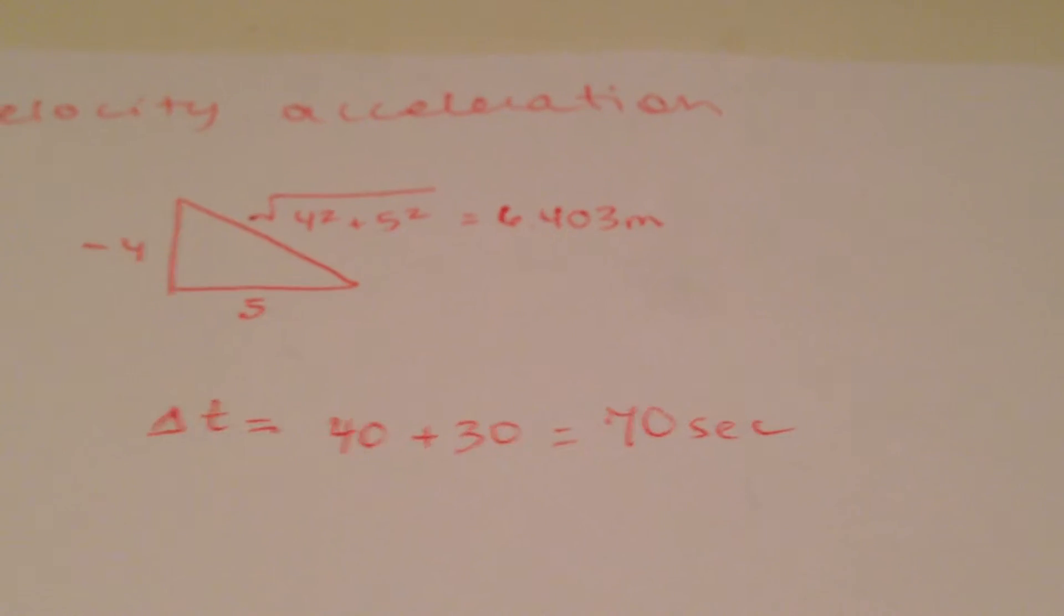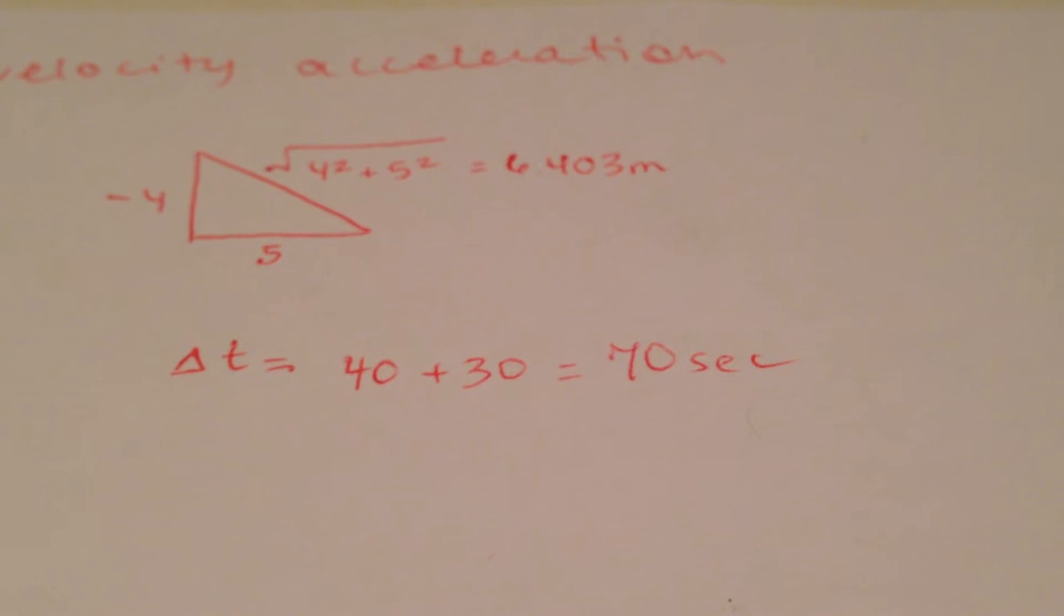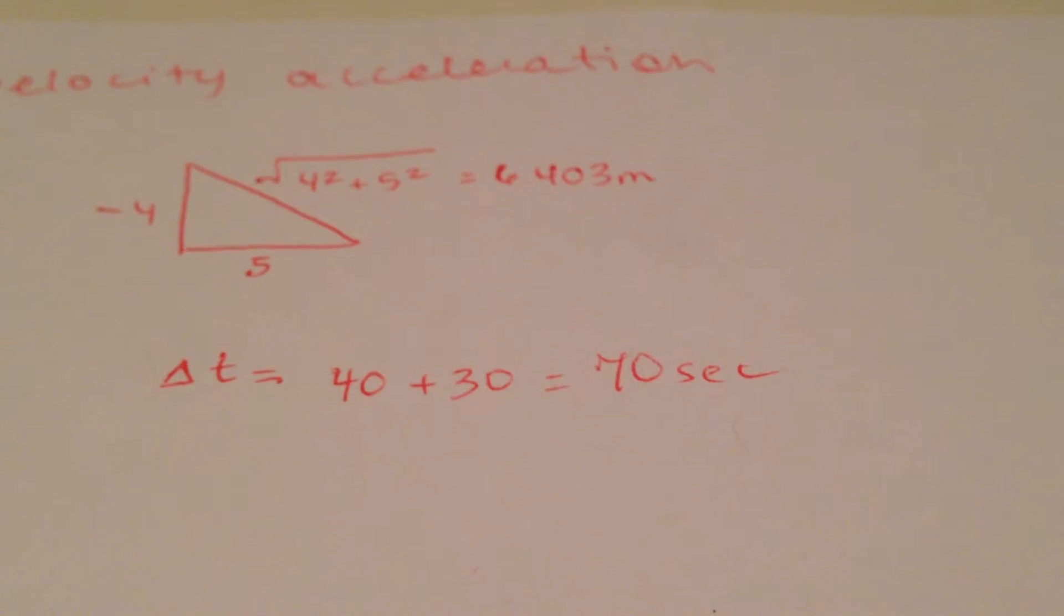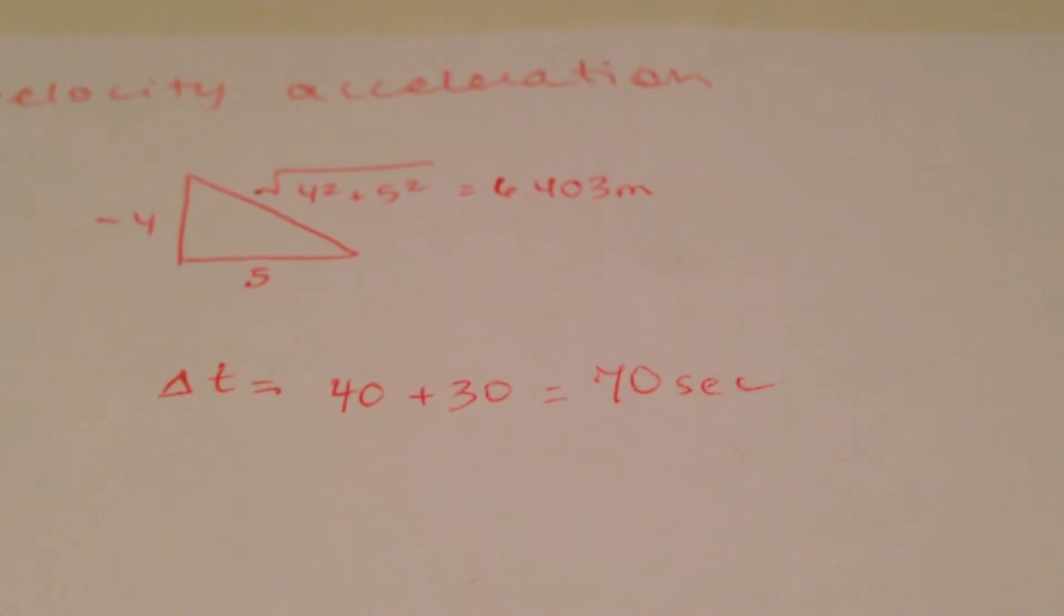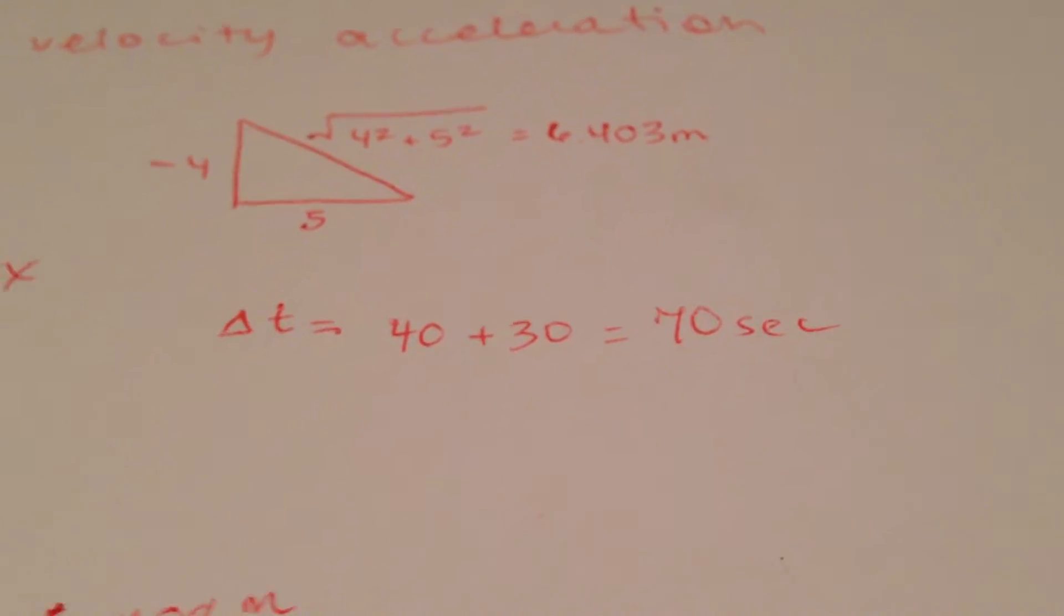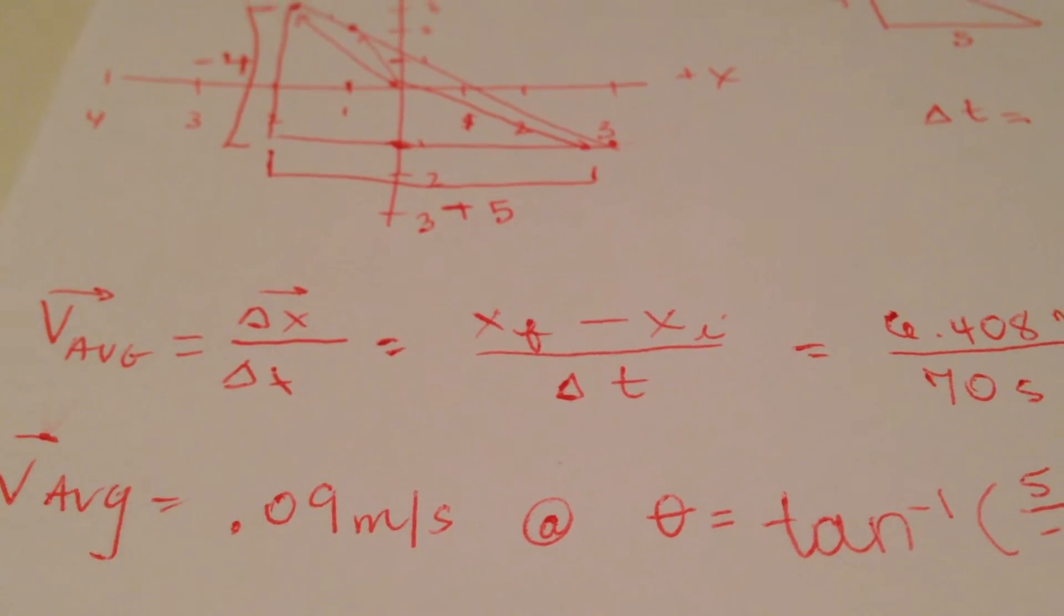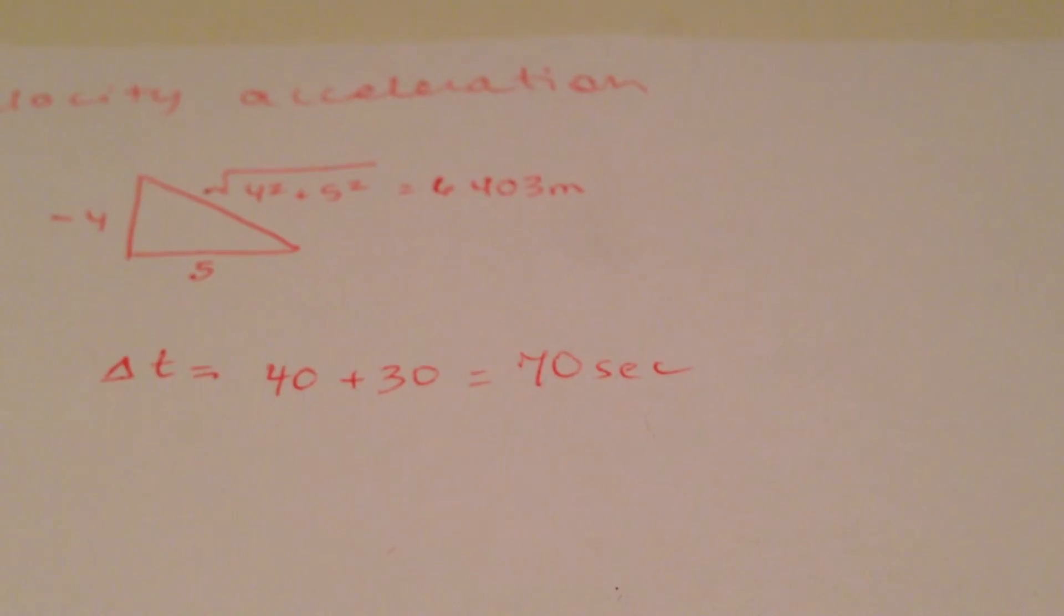So we have that displacement in meters and the question gives you the time. It tells you that to get from point 1 to point 2 it's 40 seconds, point 2 to point 3 is 30 seconds. So since we're doing average velocity we need to find the total time it took to get from A to C which is 70 seconds.